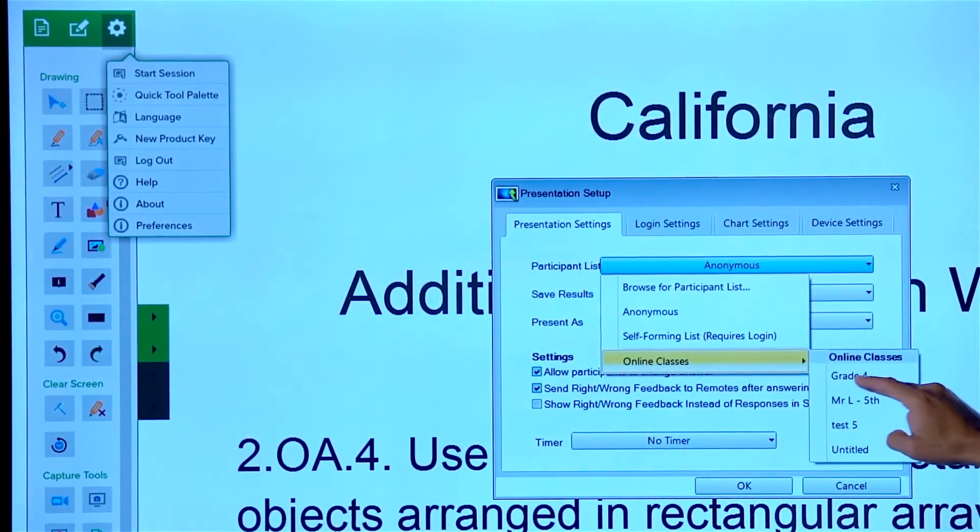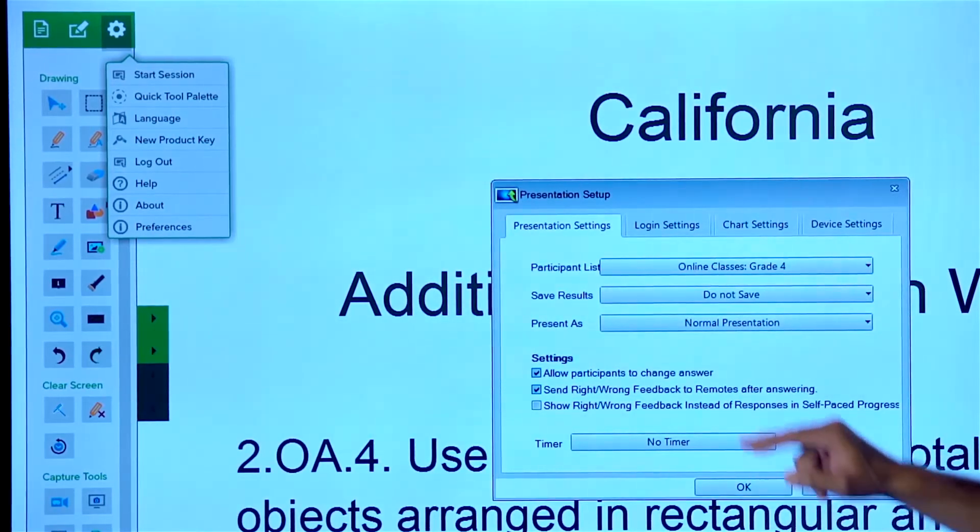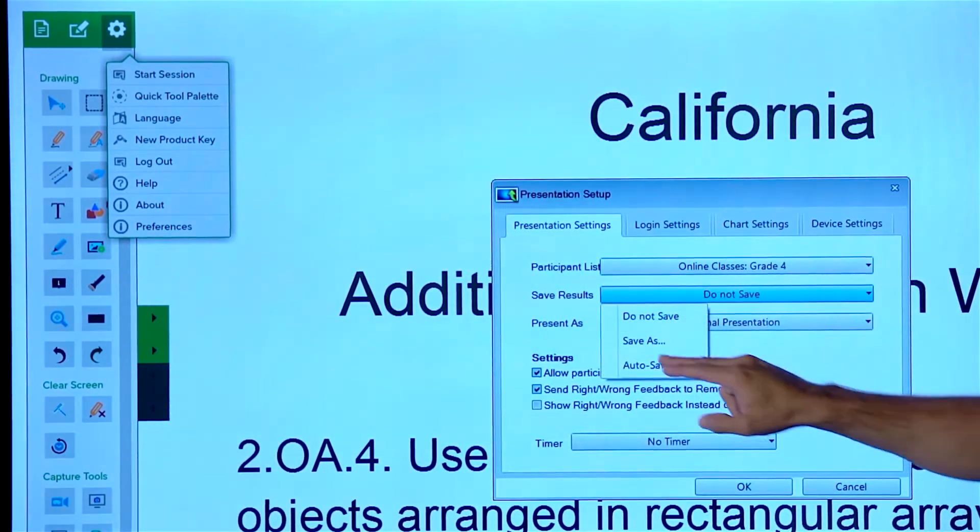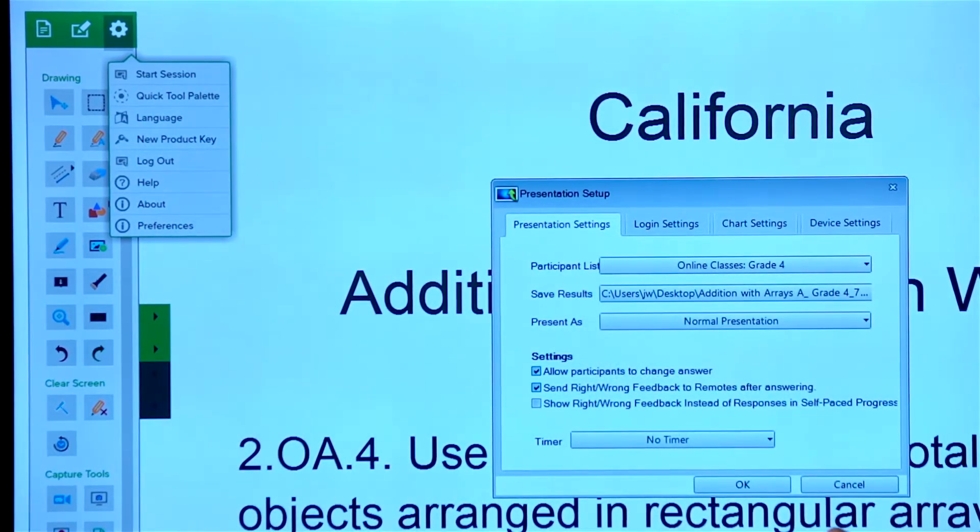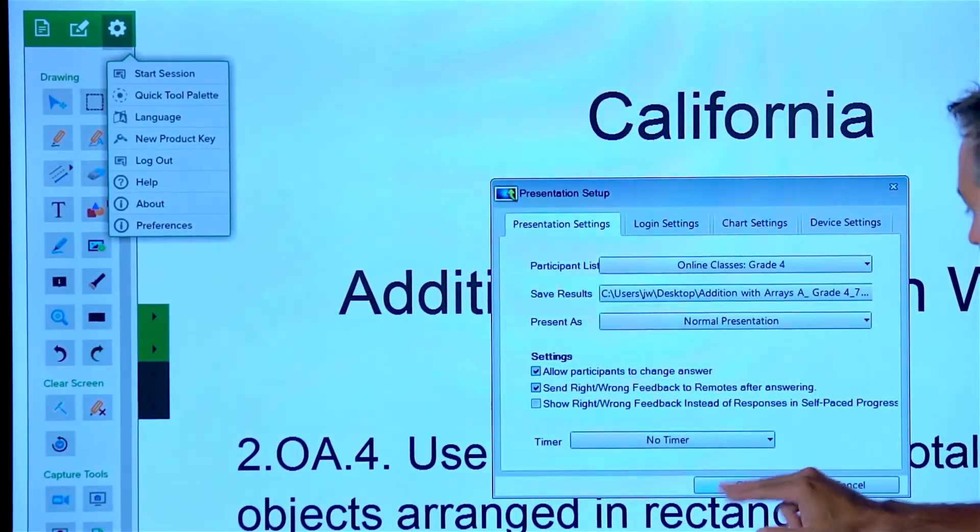I'm going to choose one of my pre-made classes. It's in my grade 4 class and I'm going to choose to auto-save just to the desktop and click OK.